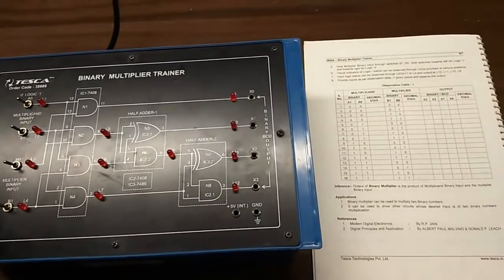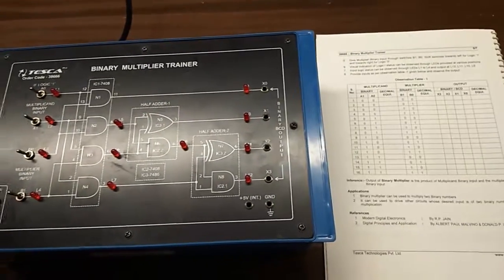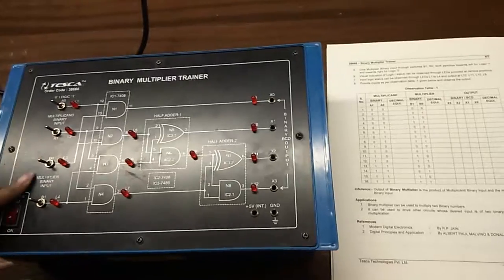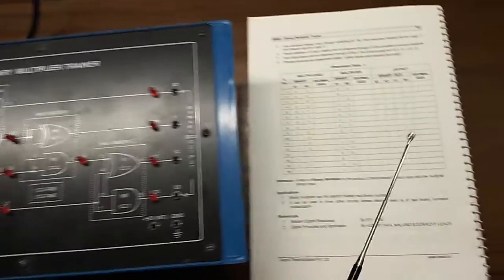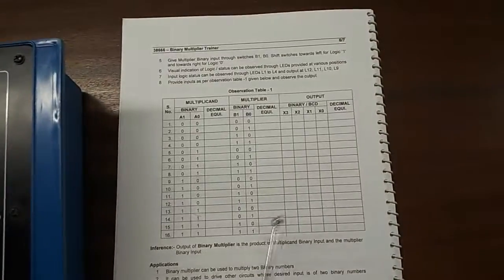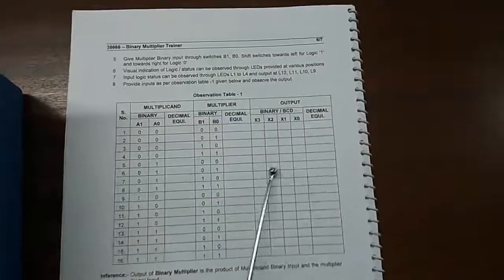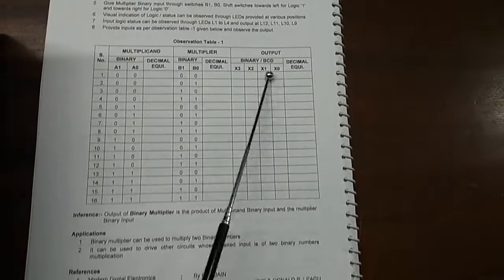Our experiment is to give multiplicand binary input with the help of these two switches and observe the output here. You can see here a table is given, this is the combination of multiplicand and multiplier and here we can write the output result.